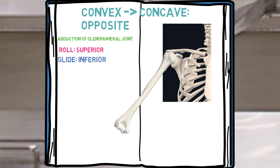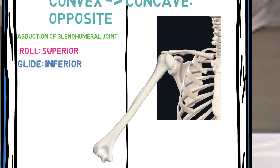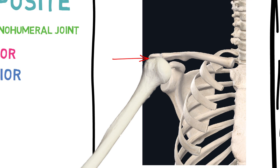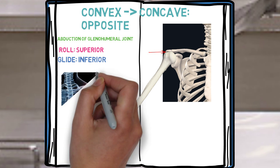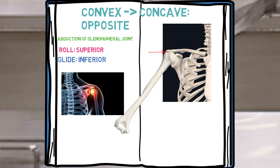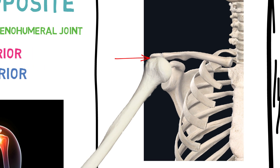Here you can see a superior roll of the humeral head. Let's pause for a second. Can you see that there is no space under the subacromial arch? So if the humeral head keeps migrating up, it would start impinging on the structures located in the subacromial space. It will start creating inflammation and later degeneration of the muscular tendinous junction of the supraspinatus.